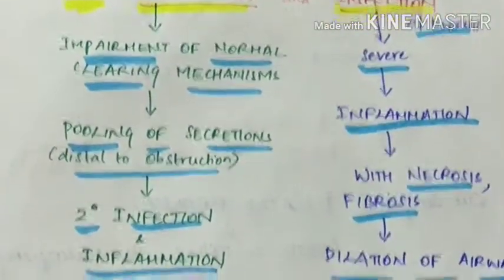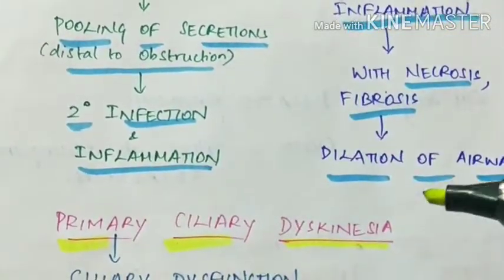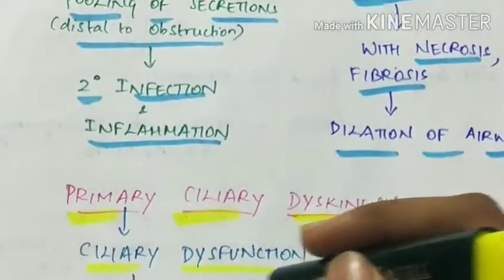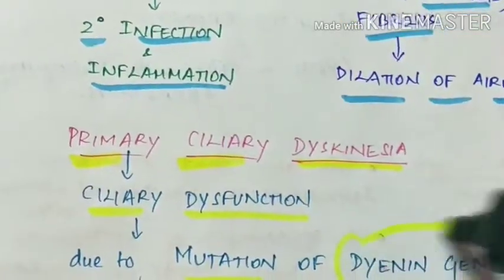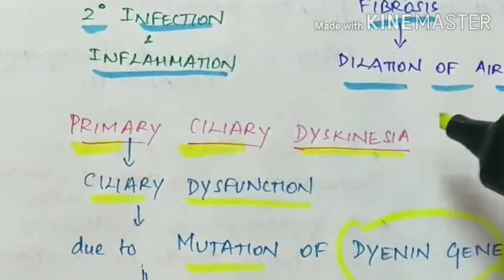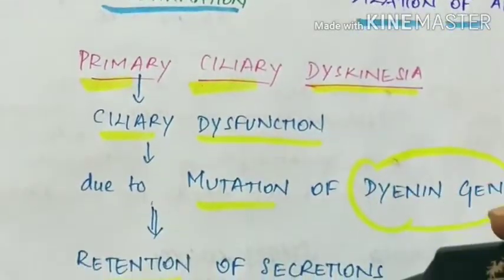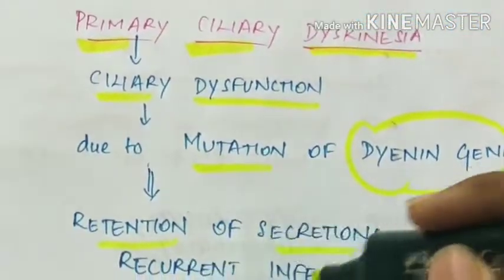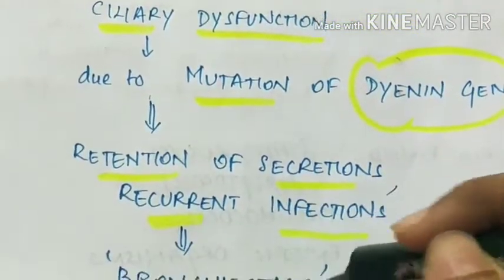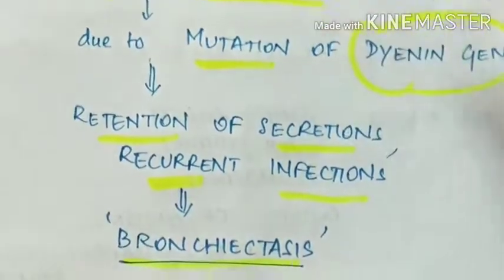Next is primary ciliary dyskinesia, where there is ciliary dysfunction due to mutation of the dynein gene. There is retention of secretions and recurrent infections due to retained secretions, which leads to bronchiectasis.